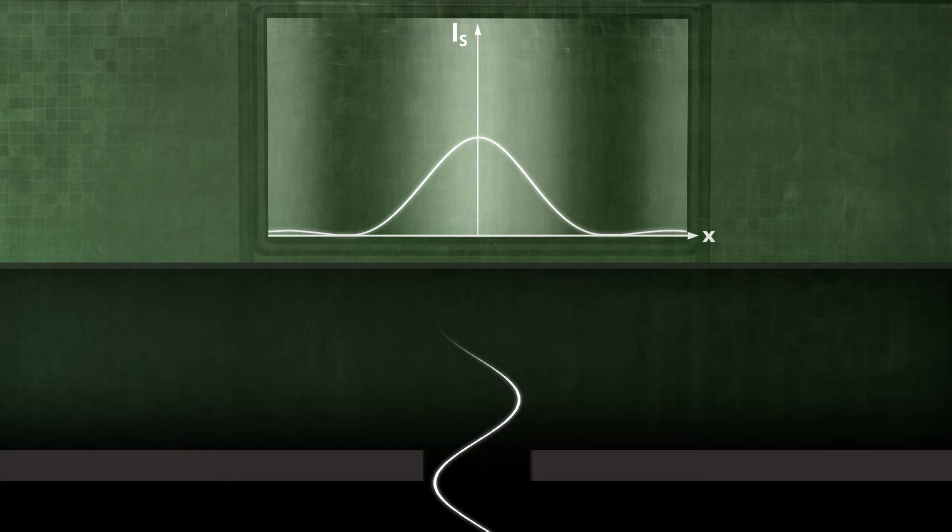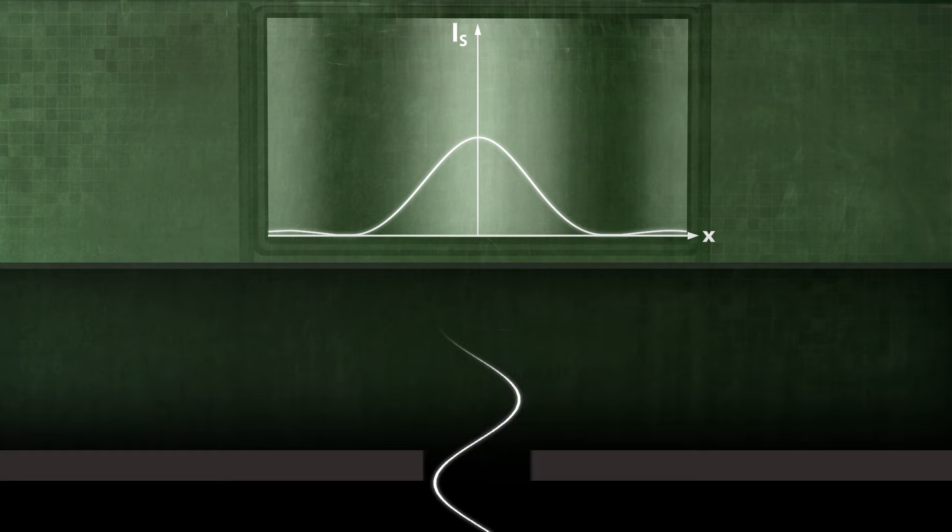Light travels in all possible directions. Starting with the straight path, we will divide the slit into six segments of equal size and consider the phase differences that emerge.